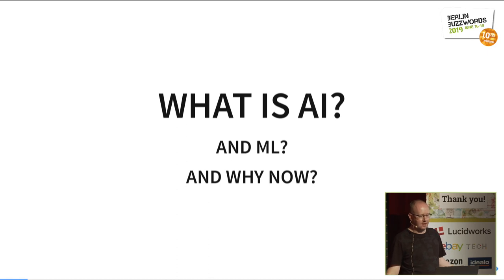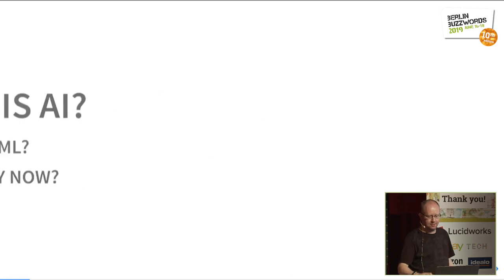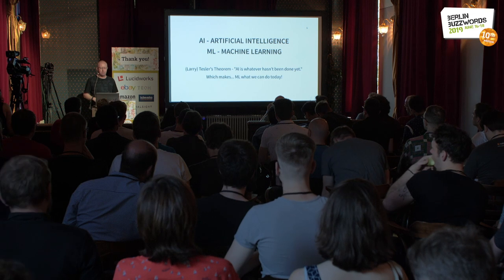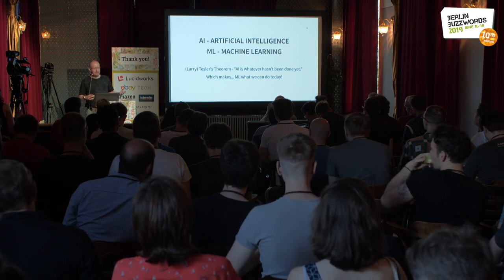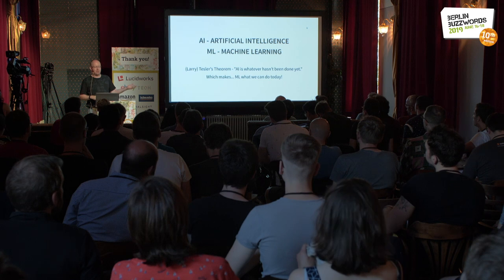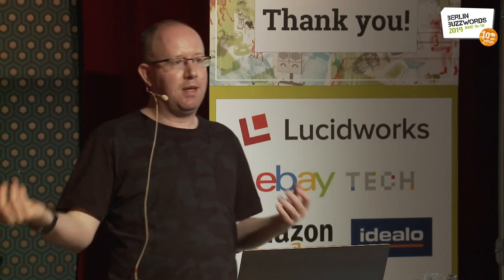So, what is AI and ML, and why is it the buzzword at Berlin Buzzwords this year? AI — artificial intelligence — ML — machine learning. Larry Tesla's theorem is that AI is whatever hasn't been done yet, and ML is whatever we can do today. Some other people say that if you're raising VC funds, it's AI; if you're hiring staff, it's ML.